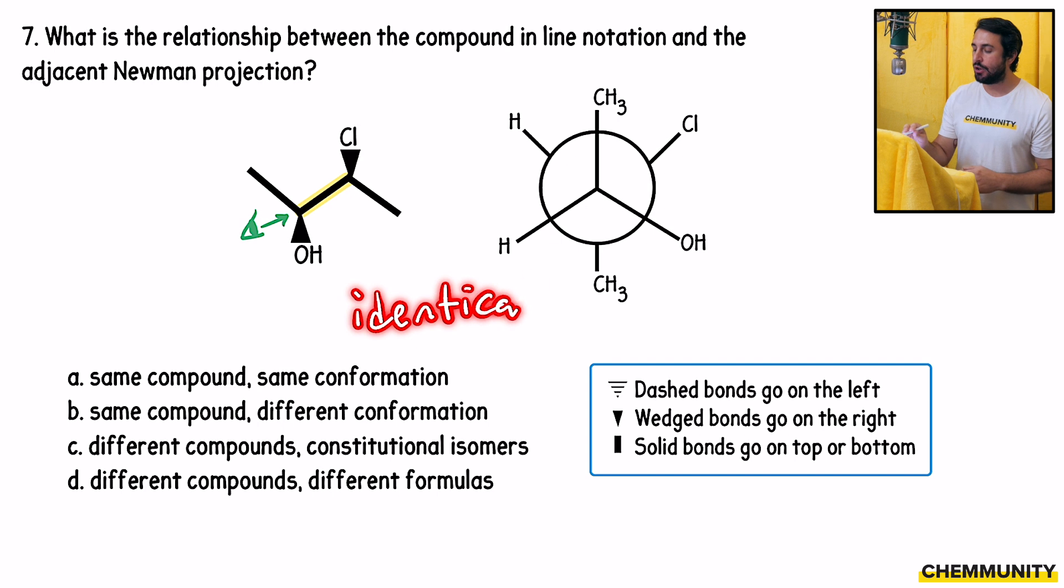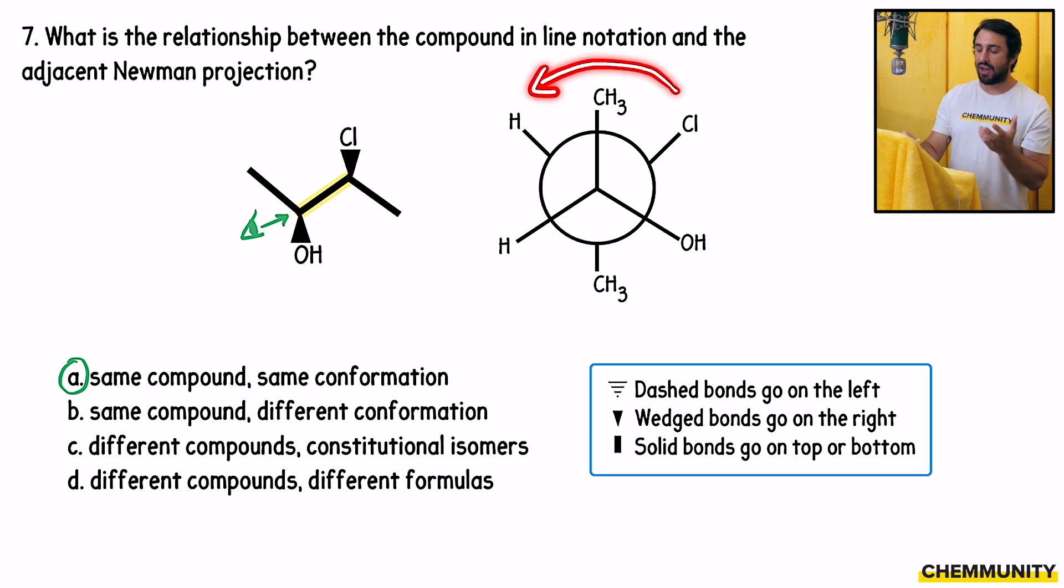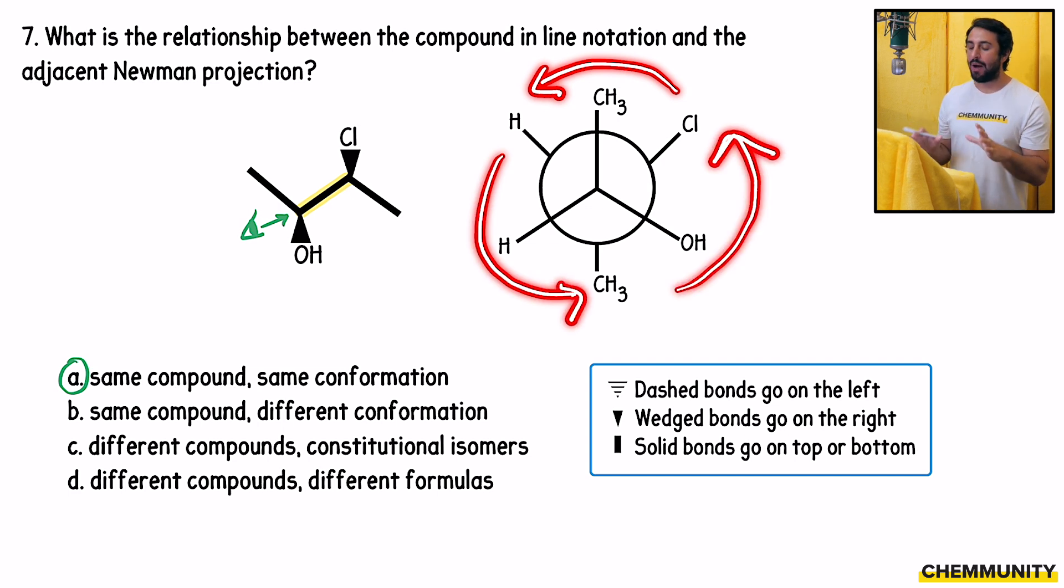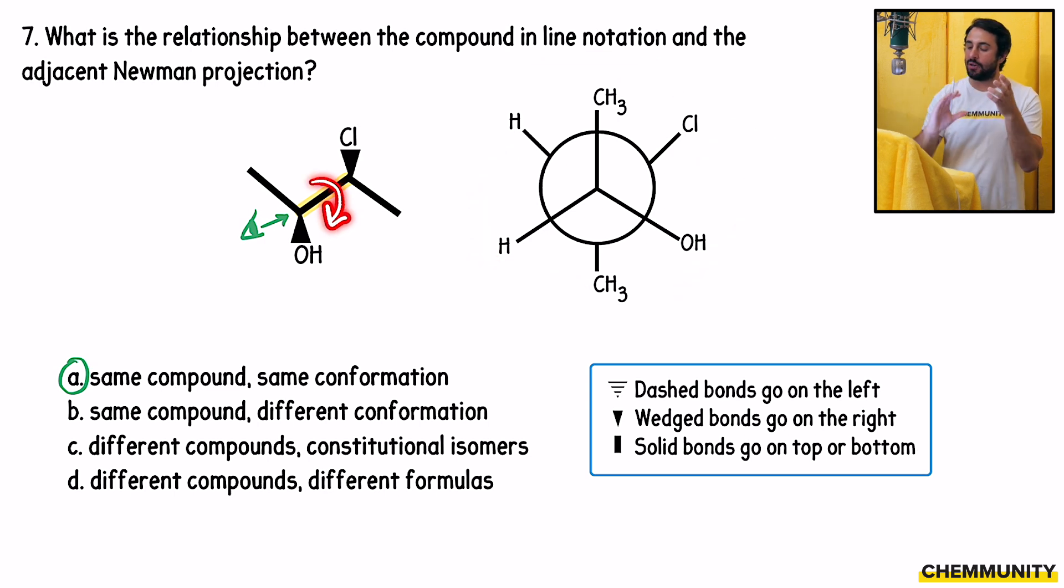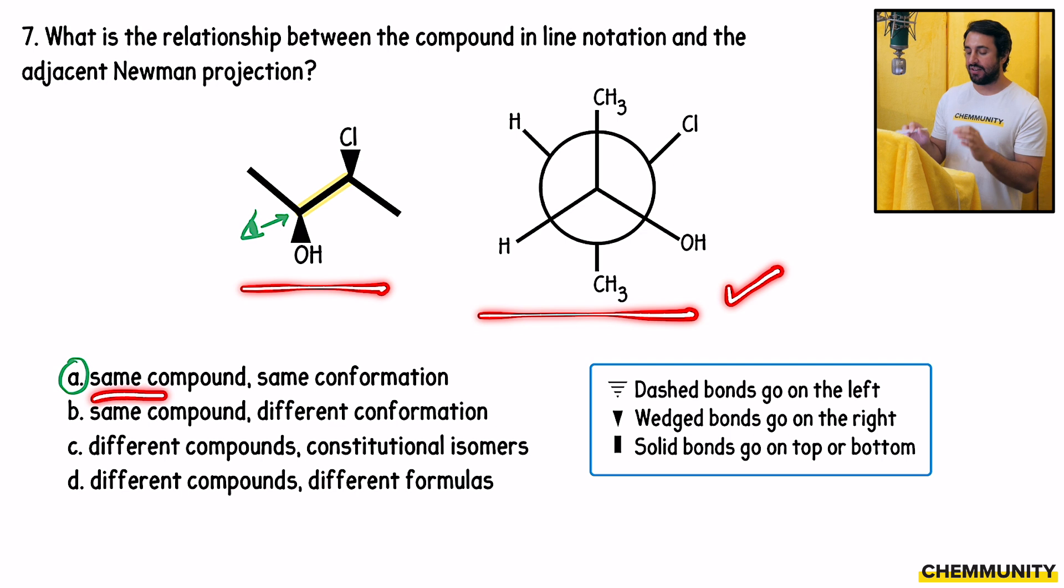This actually is identical. This Newman projection does represent the molecule in line notation. This is the same compound and it is in the same conformation. So we could have had the same compound in different conformations. That would be if we took either the front carbon or the back carbon and rotated it in some way. So we could have had the chlorine where the hydrogen is, the hydrogen where the methyl is, the methyl where the chlorine is. That would have been the same compound. Just we would have rotated that central carbon-carbon bond to get a different conformation. But certainly they're not different compounds. We know that it's the same atoms and the same connectivity. They're not different compounds. They're not different formulas. They're not different constitutional isomers. We can tell immediately that they're the same compound. And then by translating the line notation to the Newman projection and seeing that it matches the Newman projection we have, that's how we know that it is the same compound and furthermore in the same conformation.